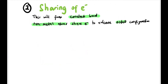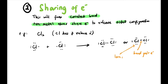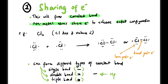Sharing of electrons between non-metal atoms is done to achieve a stable configuration. For example, in Cl₂, both Cl atoms have seven valence electrons and the same electronegativity, so they tend to share their electrons. The bond pair is shown between the two Cl atoms, and the lone pairs are the double dots on each Cl atom. Covalent bonds can be either single, double, or triple bonds, and each line represents two electrons.